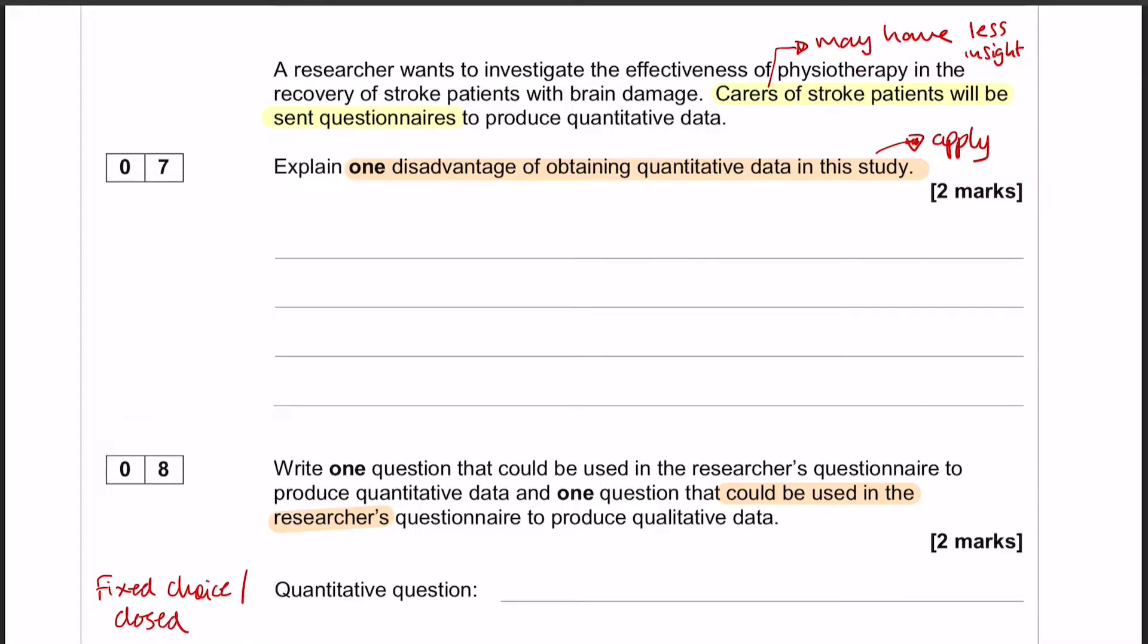So question 7 is explain one disadvantage of obtaining quantitative data in this study. Okay, so you need to know your limitations of quantitative data, but of course there is going to be a mark for applying it as well. So you're getting one mark for identifying a limitation and one mark for applying it to this particular study, which is all about investigating the effectiveness of physiotherapy in the recovery of stroke patients with brain damage.